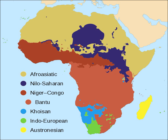Austronesian languages are spoken in Madagascar. Indo-European languages are spoken in South Africa and Namibia — Afrikaans, English, German — and are used as lingua francas in the former colonies of Britain, France, Belgium, Portugal and remaining Afro-Portuguese islands, and the current Spanish territories of Ceuta, Melilla and the Canary Islands.